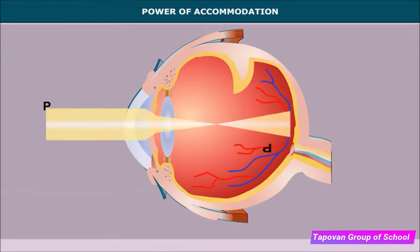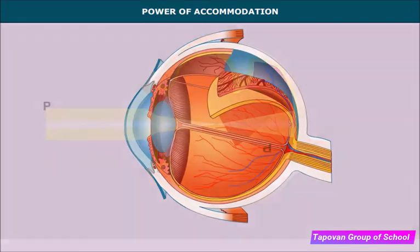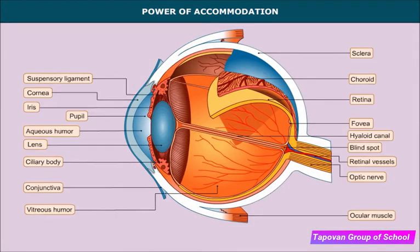The ciliary muscles can change the thickness of the lens and hence its focal length by contracting and expanding. Due to this, we are able to see both distant and nearby objects clearly. This adjusting action of the eye is known as the power of accommodation.